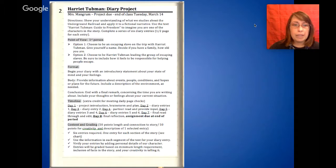The format: Begin your diary with an introductory statement about your state of mind and your feelings whether you're an escaping slave or Harriet Tubman helping people to escape. The body of your diary entries will provide information about events, people, conditions and hopes or plans for the future including a description of the environment as needed. Keep in mind though you're not making up your very own story. You are basing it on events in the Harriet Tubman Guide to Freedom. Your conclusion will end with a final remark concerning the time you are writing about. Include your thoughts or feelings about your current situation.